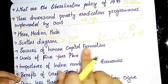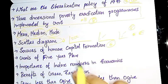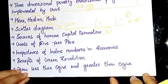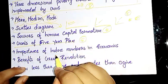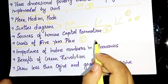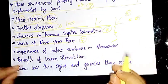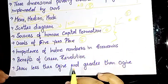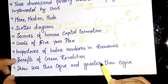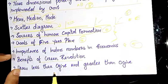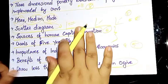Source of Human Capital Formation — what is the question for 5 marks? Next one is the Goals of the Five Year Plan — that is what we want for 5 marks. Then: Importance of Index Numbers in Economics — 5 marks. Then: Benefits of the Green Revolution. Then: Draw less than or greater than ogive curves — we want to get less than or greater than.